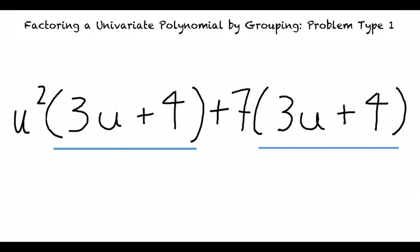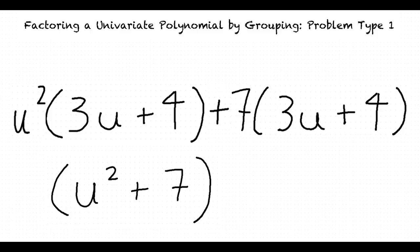Write the coefficients outside the parentheses of each binomial as another binomial yielding u squared plus 7. Next, multiply that common binomial left over by the binomial resultant from the GCFs. This is our final answer: u squared plus 7 times 3u plus 4.